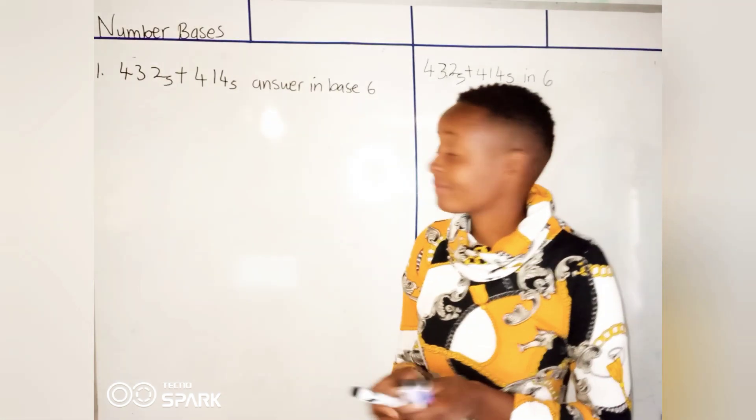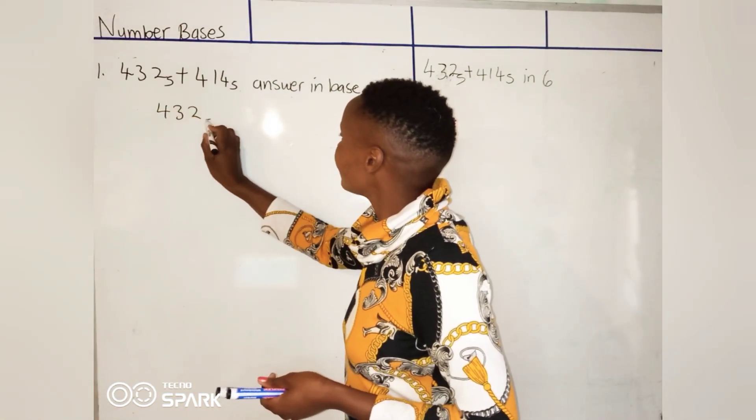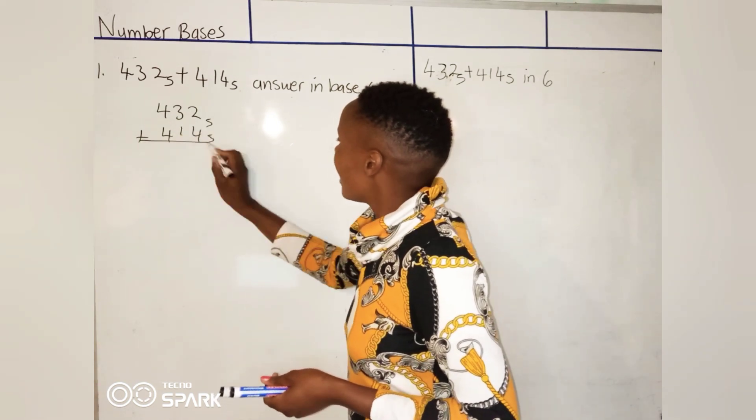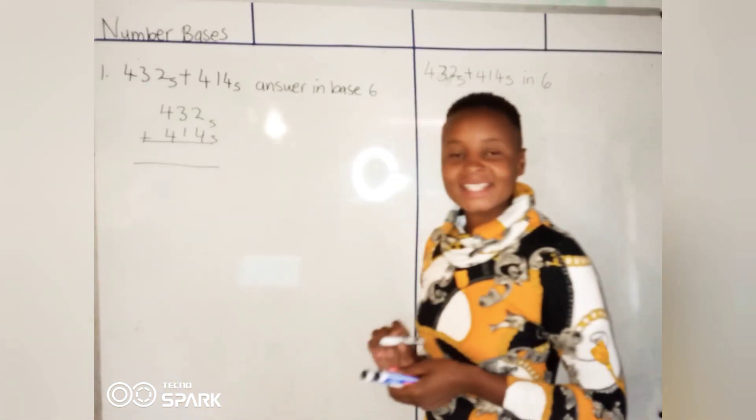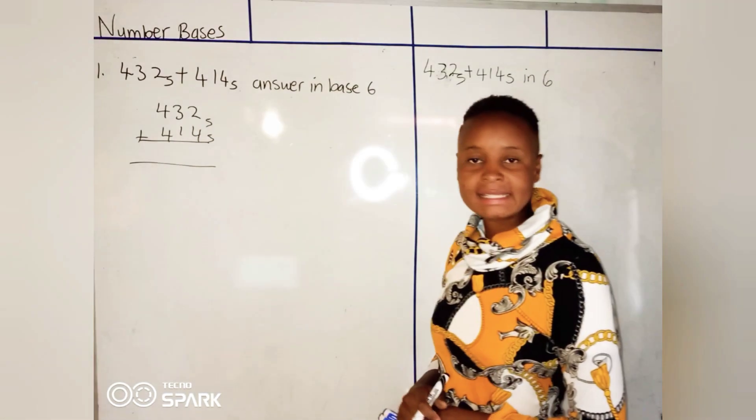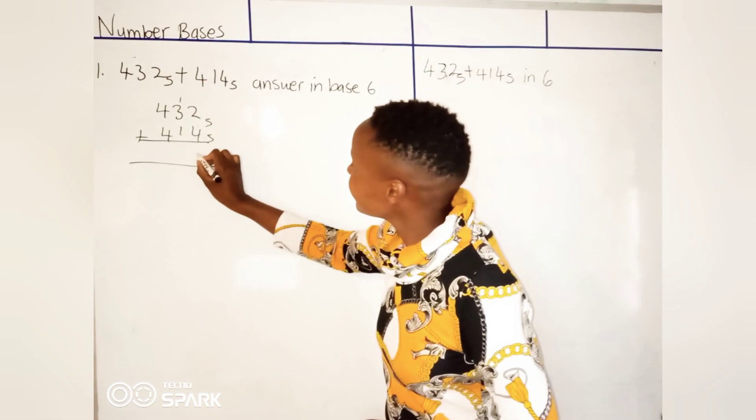Let's start in base 5. So it's 432 base 5 plus 414 base 5. Pay attention to this one. 2 plus 4 is 6. How many times does 5 get into 6? It's 1 remainder 1.